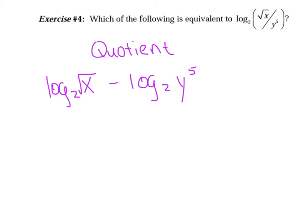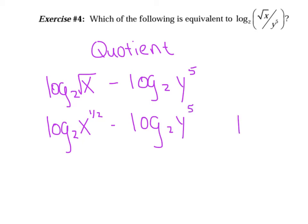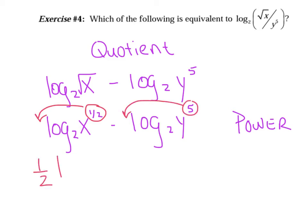What I'm going to do now is rewrite that first term so the X is raised to the one-half power. Anytime you have a radical sign, instantly use an exponent of one half. Now I'm going to use the power law and say one half times log base 2 of X minus five times log base 2 of Y.